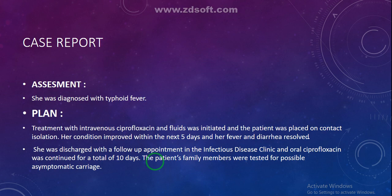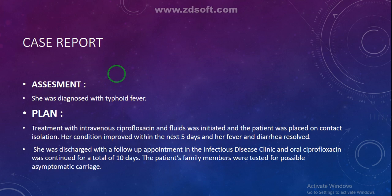She was diagnosed with typhoid fever due to the presence of Salmonella typhi in her blood and urine. Treatment was initiated with intravenous ciprofloxacin and IV fluids, and the patient was placed on contact isolation to prevent spread. Her condition improved within five days, fever and diarrhea resolved, and she was discharged with a follow-up appointment in the infectious disease clinic. Oral ciprofloxacin was continued for 10 days and family members were tested for possible asymptomatic carriage.